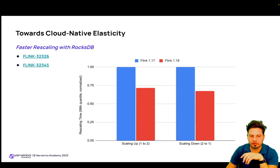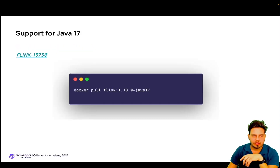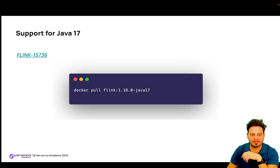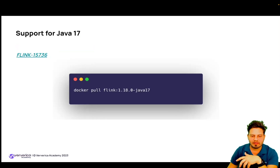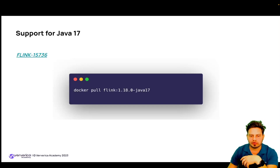There is also support — finally — for Java 17, which everyone has been waiting for, as Java 17 has been around for years. Unfortunately there were a few issues that needed to be addressed and it took quite a while for Flink to support it, but now it's here. It should be easier to start supporting newer major versions going forward.